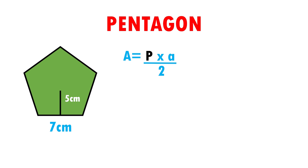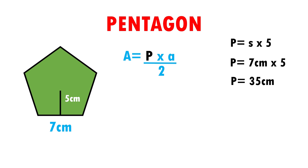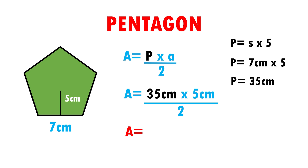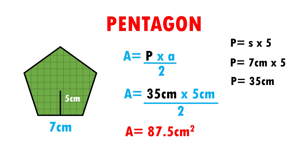The formula to calculate the area of the pentagon is area is equal to perimeter times apothem over 2. The first thing we have to do is find the perimeter. The formula to find the perimeter is perimeter is equal to side times 5. When substituting data, perimeter is equal to 7 cm per side times 5 sides, which gives 35 cm. Now substituting into the area formula: area is equal to 35 cm times 5 cm over 2. Multiplying 35 times 5 gives 175, divided by 2 gives 87.5 cm squared. This means that our pentagon can fit 87.5 squares of 1 cm per side.